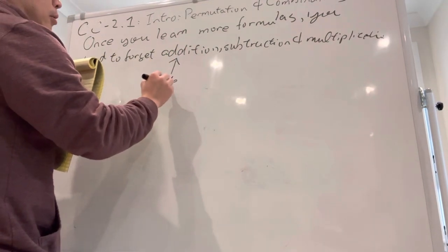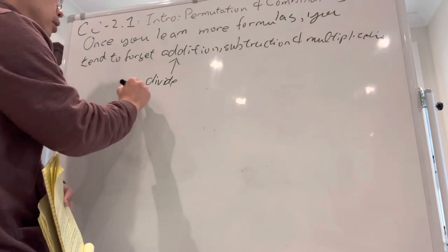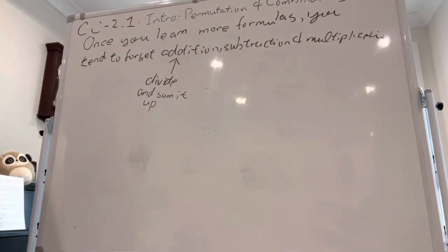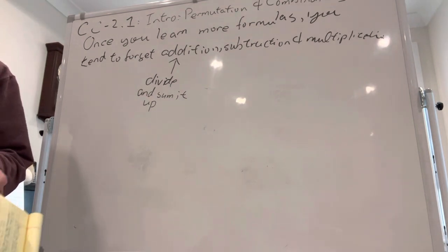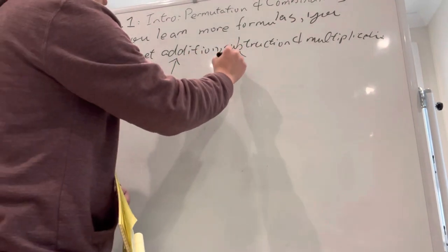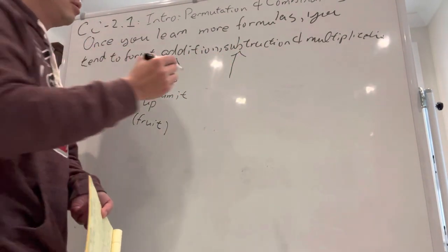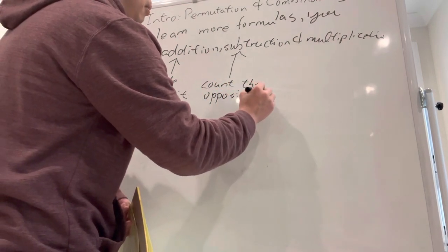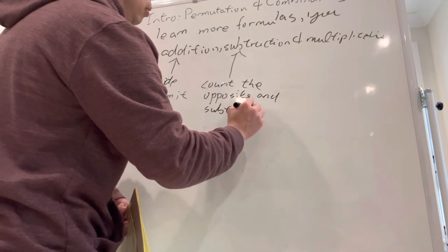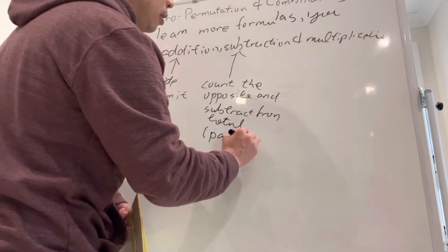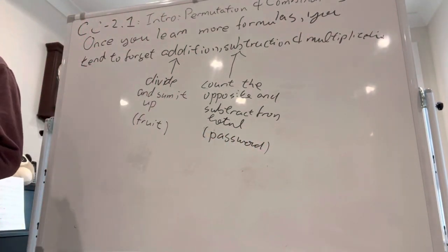Once you learn more formulas, you tend to forget addition, subtraction, and multiplication. Addition is divide into non-overlapping parts and sum it up. Remember the example about fruit baskets in the last lecture—how to make a fruit basket out of like six apples and nine oranges? Subtraction: if counting something is too difficult, count the opposite and subtract from the total. Do you remember the six-symbol password in a computer with no repeating symbols? That's an example where counting is really hard, but counting the opposite is a lot easier.